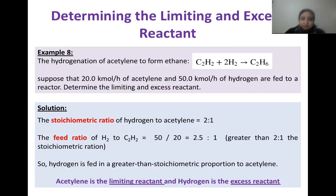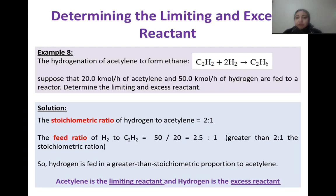How do we determine which reactant is limiting and which is excess when A and B react to form C? We compare the feed ratio of both reactants to the stoichiometric ratio from the chemical reaction equation. This comparison tells us which reactant is in excess and which is limiting.